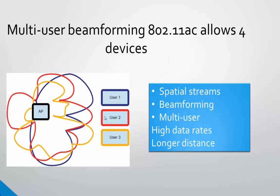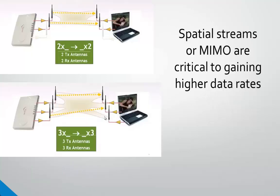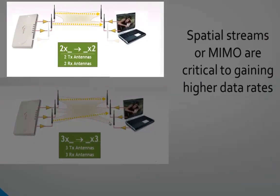Spatial streaming, also known as MIMO, will provide a substantial data rate improvement over longer distances and is one of the most exciting new technologies impacting data rates. In the top picture, we see two antennas on the access point and two antennas on the laptop, allowing up to two spatial streams with 802.11n or AC — doubling our data rate with two streams of data, one on each antenna. With three antennas on both the access point and laptop, we can get three spatial streams, tripling the data rate.